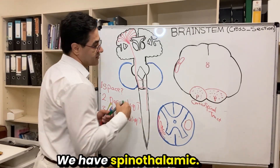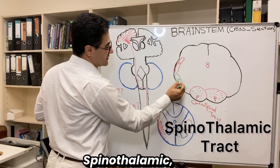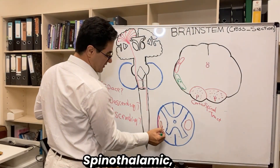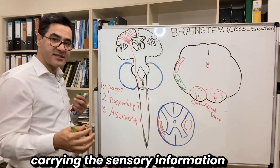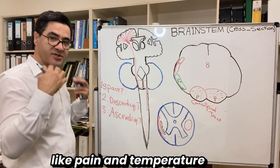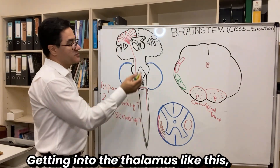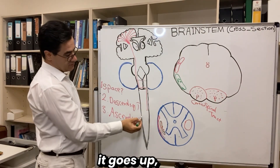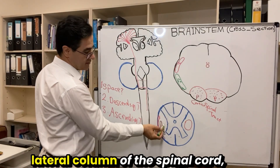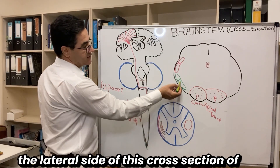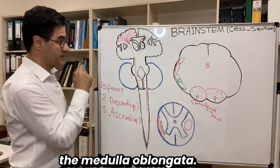We also have the spinothalamic tract. You can find the spinothalamic here — it comes from the spinal cord, carrying sensory information like pain and temperature from the body (except the head and face), getting into the thalamus going up. You can find it at the lateral column, on the lateral side of this cross-section of the medulla oblongata.